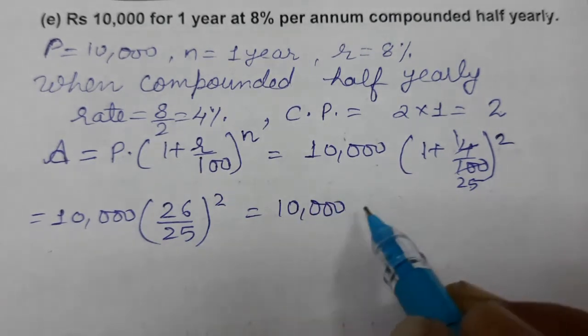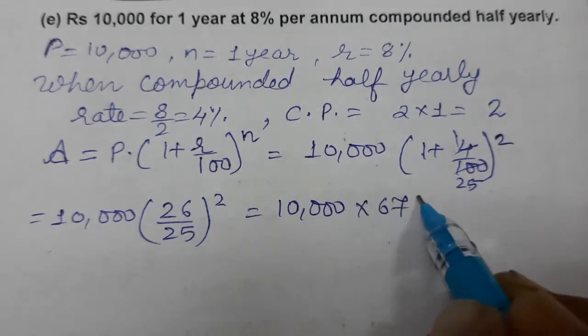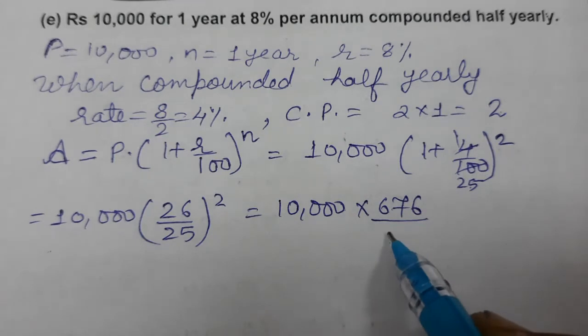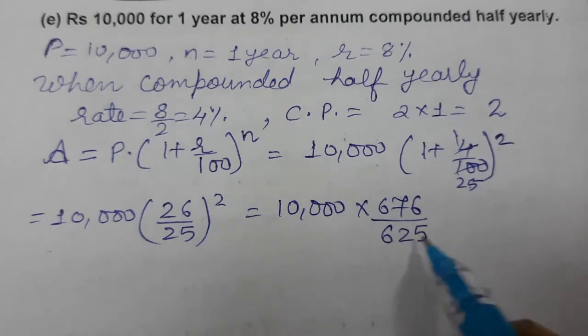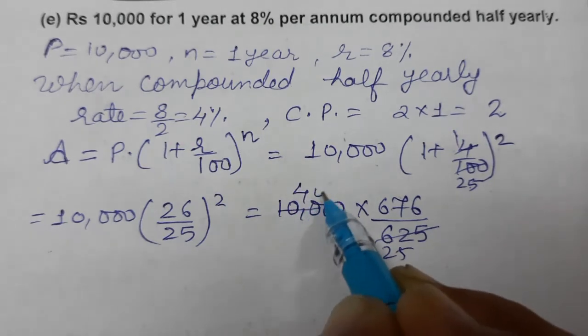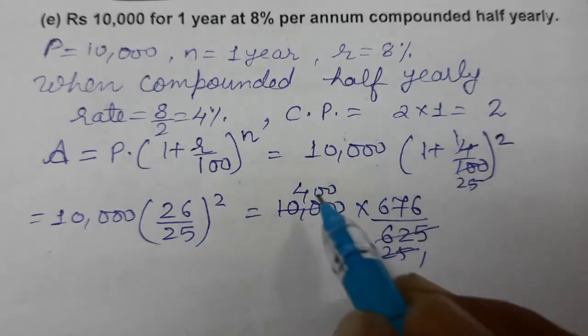So 10,000 times 26 squared is 676, and 25 squared is 625. We got 25, 25 divided by 25 is 100, and two zeros. 25 ones are 25, 16.